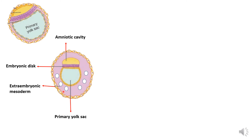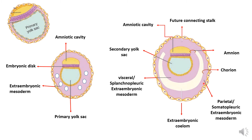What happens next? There is cavity formation within the extraembryonic mesoderm. These cavities join together to form a large cavity called the extraembryonic coelom. The coelom splits the extraembryonic mesoderm into two parts — though not all of it is split. The portion lining the hypoblast or endodermal cells is called the visceral or splanchnopleuric extraembryonic mesoderm, and the portion lining towards the trophoblastic layer is called the parietal or somatopleuric extraembryonic mesoderm.